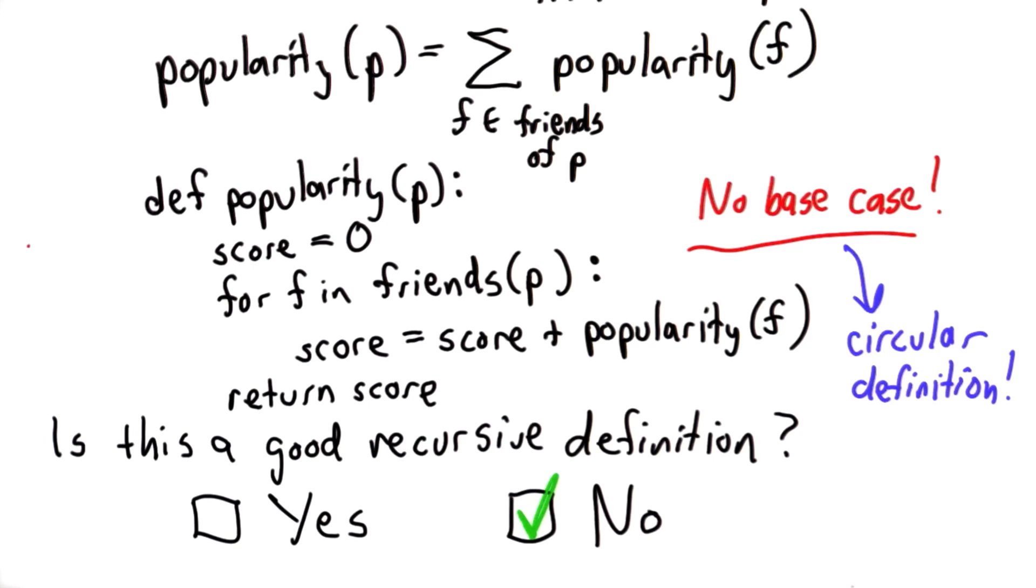So we had a base case. With factorial we said we're going to predefine that we know the value of factorial when the input is 0, we know that the value is 1. We're not going to define it in terms of factorial, we're going to know its value.